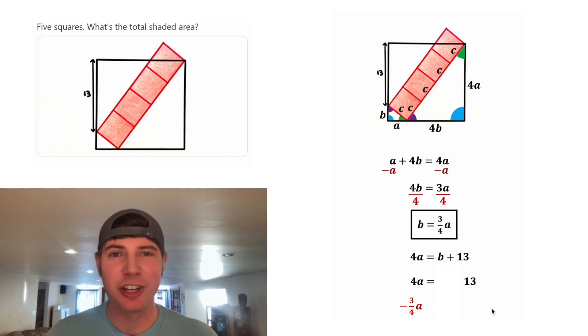On the right-hand side, these are going to cancel each other out. And on the left-hand side, we're going to do four A minus three fourths A. In order to subtract these, let's give them a common denominator. Let's rewrite this four as 16 fourths. And then we're going to do 16 fourths A minus three fourths A, which is equal to 13 fourths A.